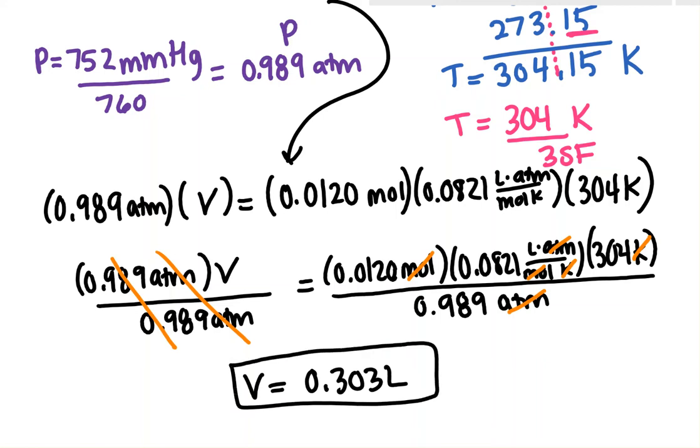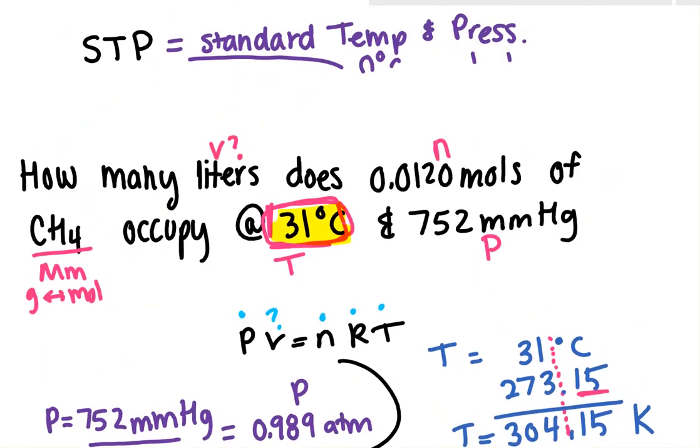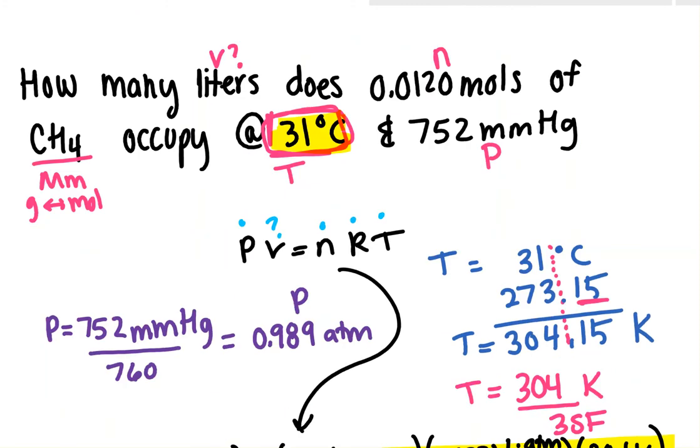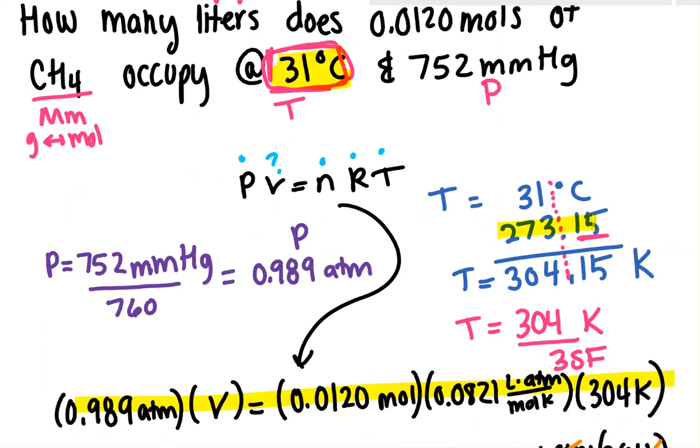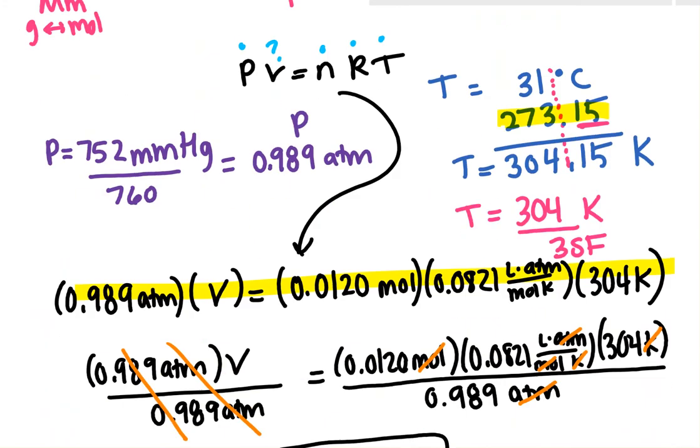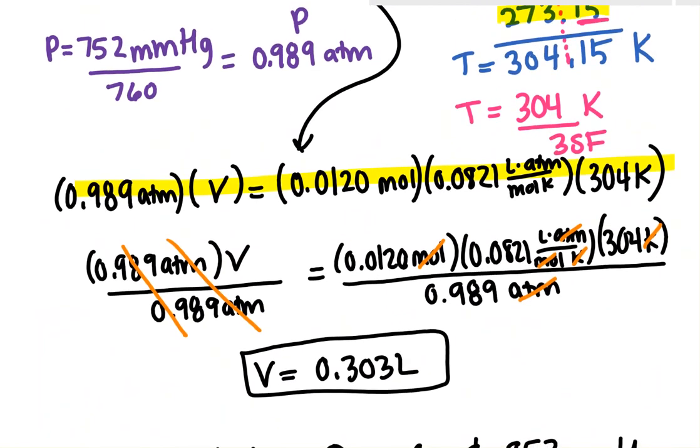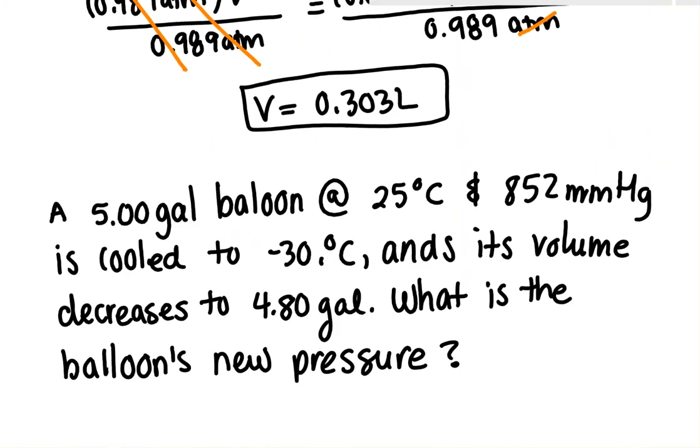And let's look at sig figs. Well, if I look at this part right here, everything has three sig figs, so that's how I got three. If I had gone back to my problem statement, this temperature, 31, is in Celsius, but it only has two sig figs. But remember, when I added the 273 here, I gained a sig fig, so I ended up needing to have three for that. Let's look at another problem.